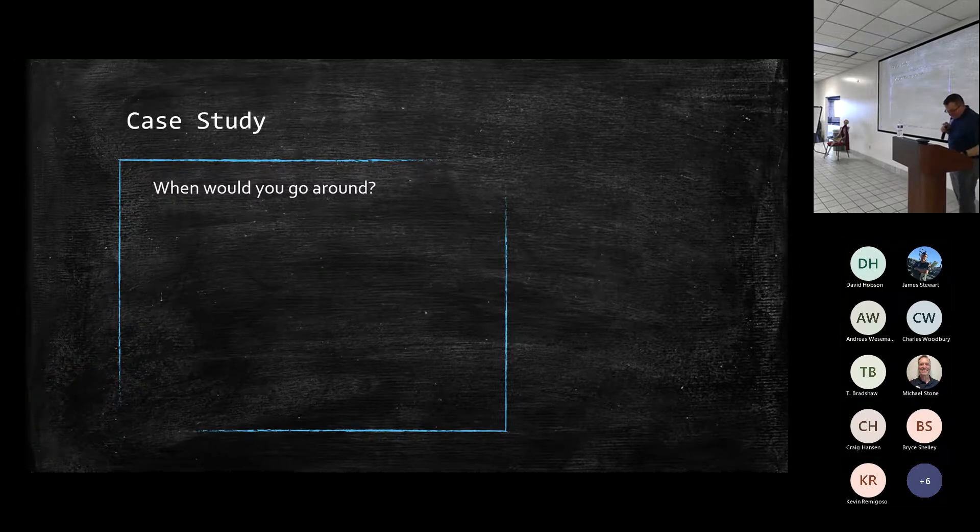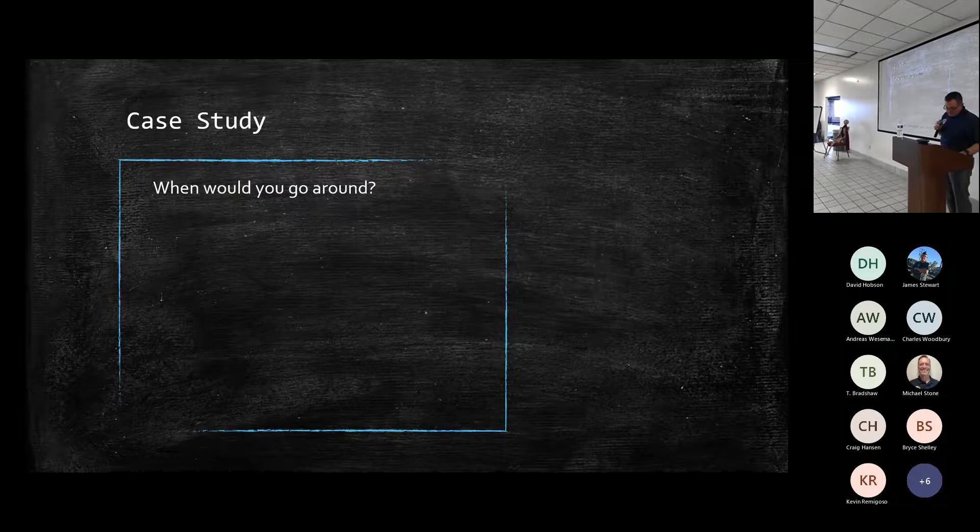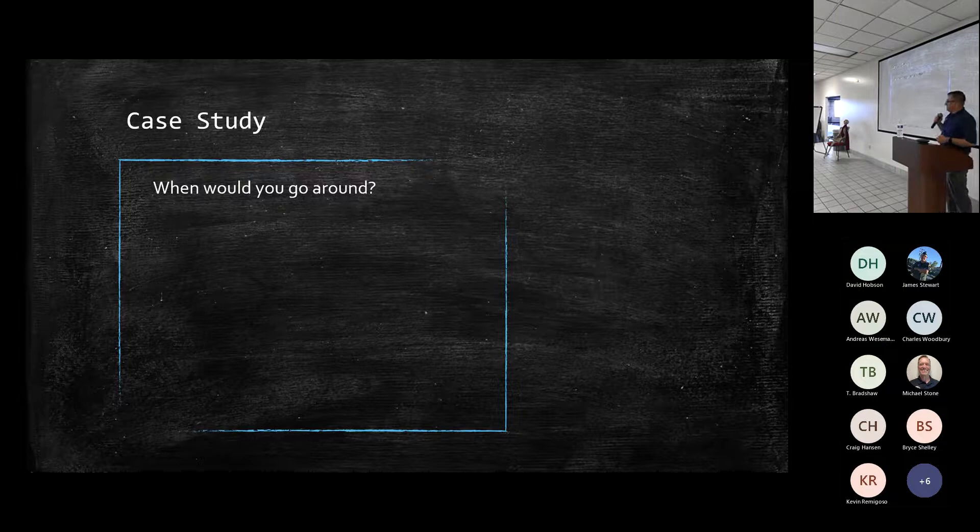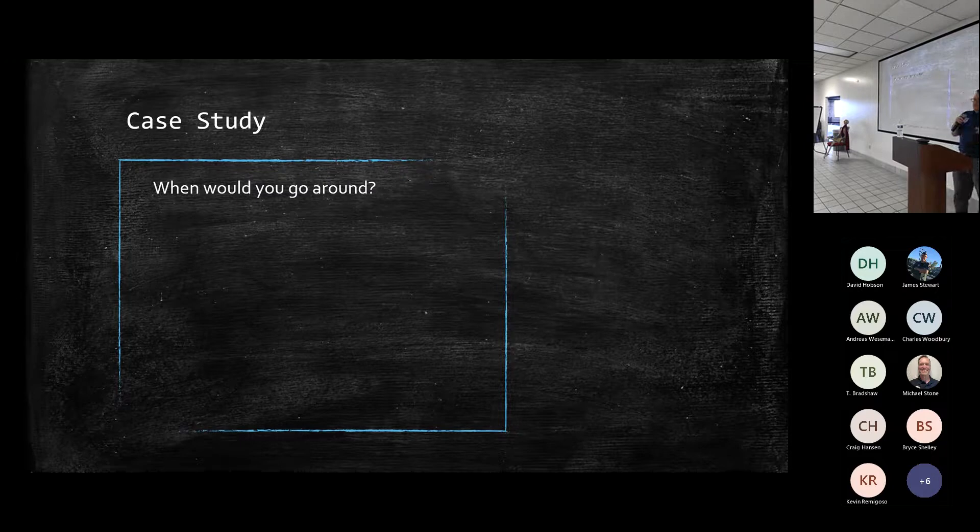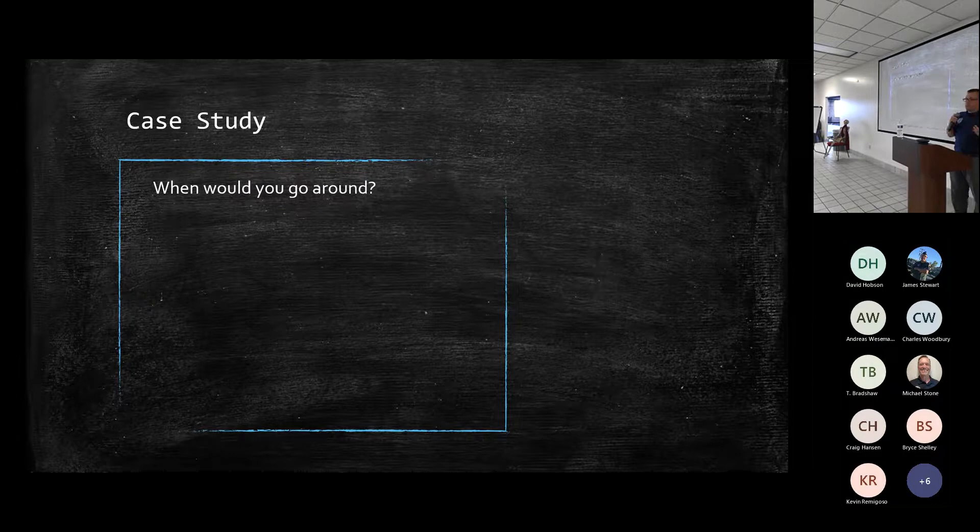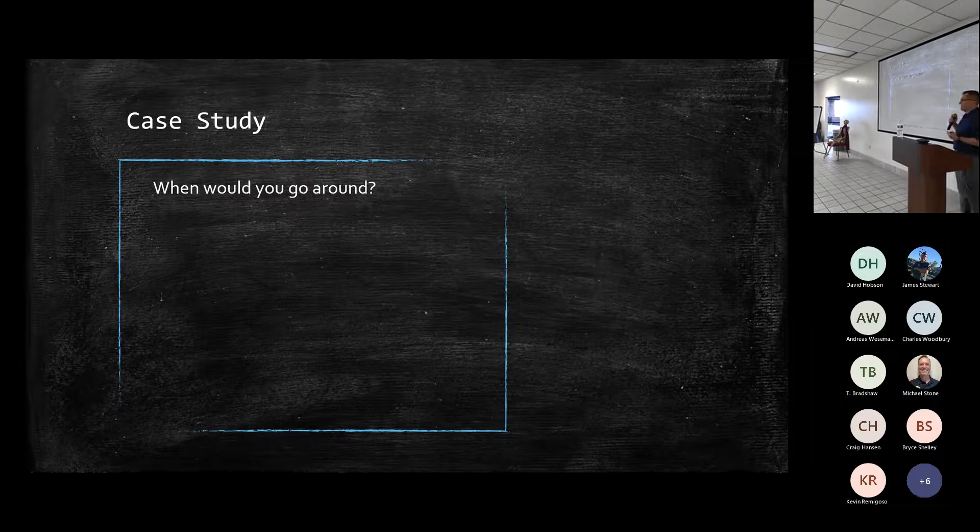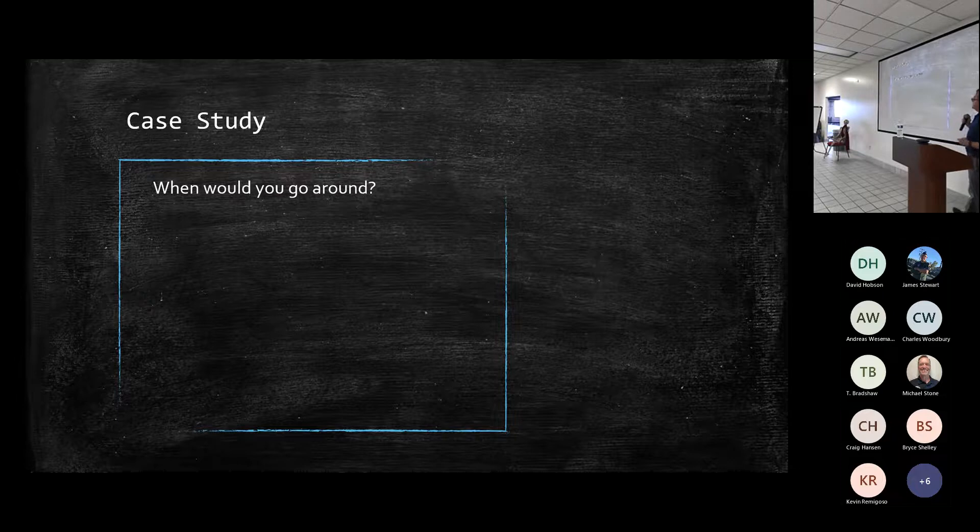All right. So getting in here with a case study, some of you are going to recognize where I'm going with this because you're part of where I got the data on this. So I get that the facts that I'm about to throw out change with every aircraft. So just apply it to what you're doing. There's no correct answer to this. This really is just something as a thought exercise. I want to think about where you would be making these decisions yourself. So when would you choose to go around?